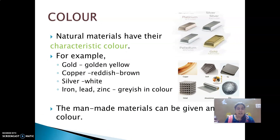Color — natural materials have their own characteristic color. For example, gold is golden yellow, copper is reddish brown, silver is white in color, whereas iron, lead, zinc are grayish in color. So all natural materials have their own characteristic color. Man-made materials can be given any color of our choice.